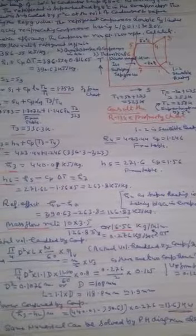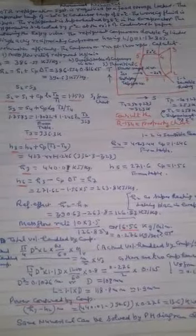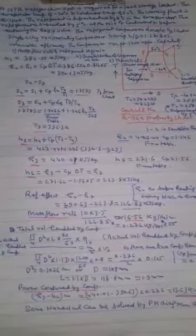First, we will make the T-S diagram. On the T-S diagram, temperature is on one axis and entropy on the other. Point 1 is at minus 20 degrees centigrade on the saturated vapor line. From the R134A table, H1 is equal to 386.55 kJ per kg.